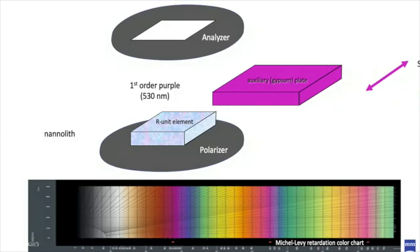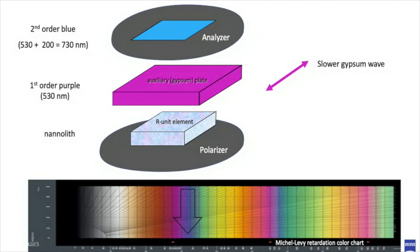Because this time, both the slower waves of the calcite and the gypsum are aligned and so, this configuration further slows down calcite's ordinary ray. In this condition, retardations of calcite and gypsum add to each other.